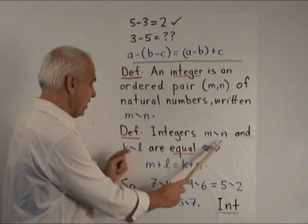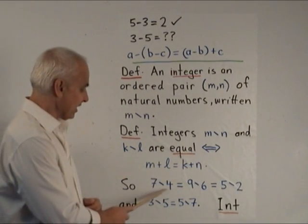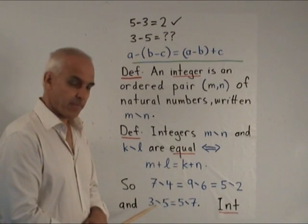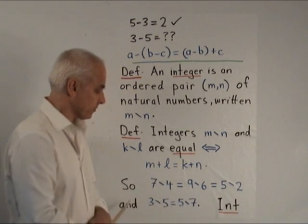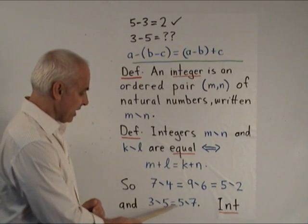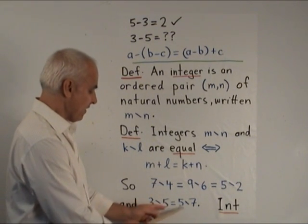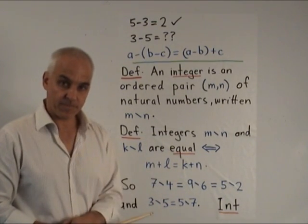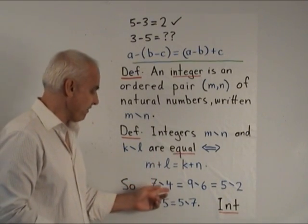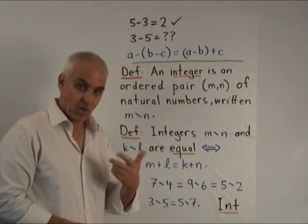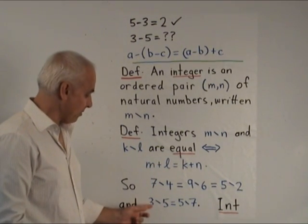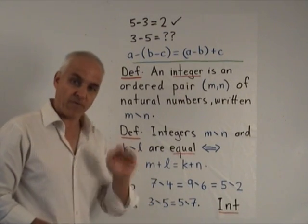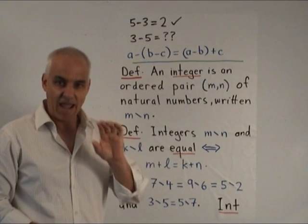That's when this one plus this one equals this one plus this one. For example, seven less four equals nine less six because seven plus six equals nine plus four, and both of them are equal to five less two. Another example: three less five equals five less seven, because three plus seven is five plus five. Notice that this condition only requires addition for natural numbers to work. Later on we're going to identify seven less four with the usual three, and three less five with the number we usually call minus two. Nevertheless, this is the theoretical framework that pegs down what these objects actually are.